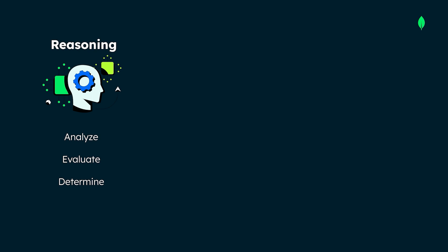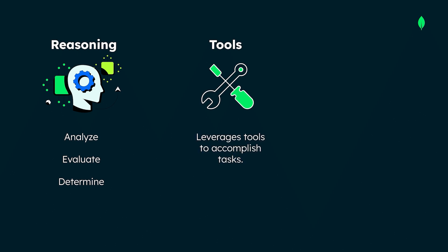Second, agents can use tools. AI agents leverage various tools to accomplish tasks, like searching databases, calling APIs, and generating content.